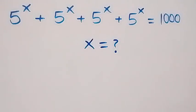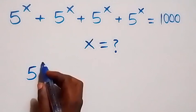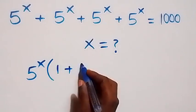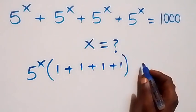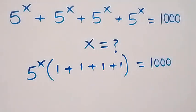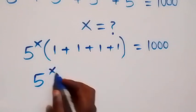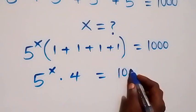Hello, you are welcome. How to solve for x in this exponential equation. We can factor 5 raised to power x out, and then this becomes 5^x times (1 plus 1 plus 1 plus 1), which equals 1000. So we have 5 raised to power x times 4 equals 1000.